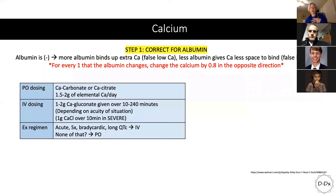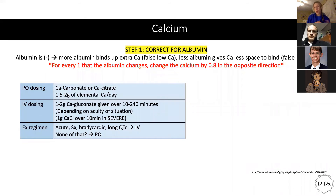For calcium, the most important part is to correct it for albumin, because calcium binds to albumin differently in various settings. For every 1 g/dL the albumin is off, you adjust the calcium by 0.8. You can also type it into MDCalc and it will do the math for you — much faster. If you don't have the mental bandwidth for the math, use your resources: computers in the hospital or your phone.